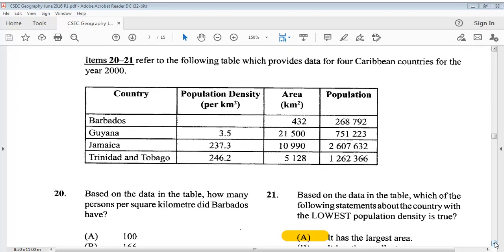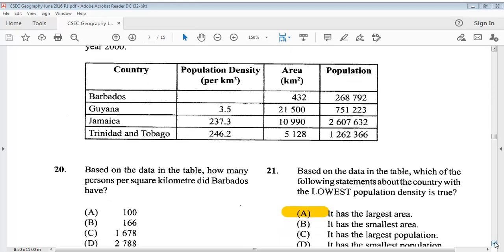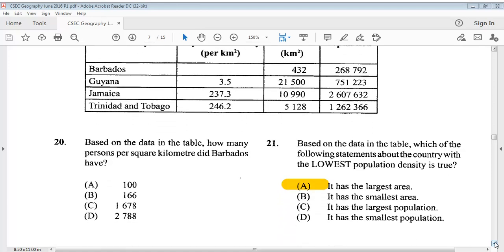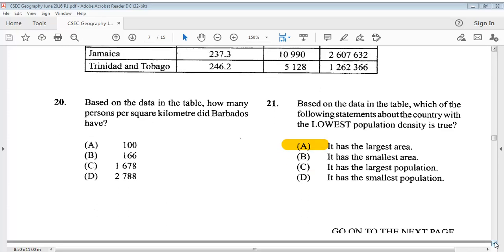Items 20 to 21 refer to the following table, which provides data for four Caribbean countries for the year 2000. You can take a look at your table. Question 20 says, based on the data in the table, how many persons per square kilometer did Barbados have? This was a question that we could not find any answer for. There was an error in this question. There is no correct answer there. Question 21 says, based on the data in the table, which of the following statements about the country with the lowest population density is true? The answer is A, it has the largest area.